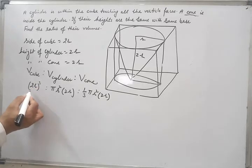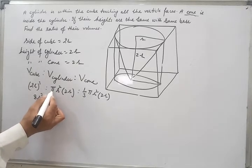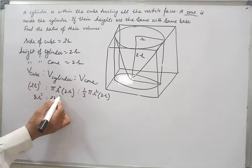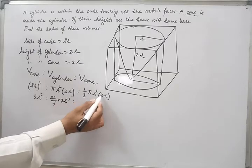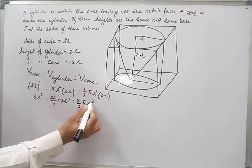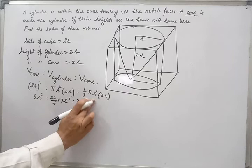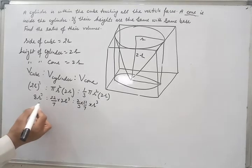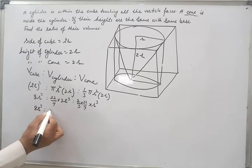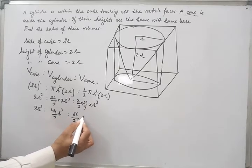Now open all the brackets. It becomes 8r³ : (22/7)(2r³) : (2/3)πr³. Writing π as 22/7, the cylinder term becomes 44/7 · r³ and the cone term becomes 44/21 · r³.